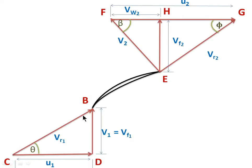We can now draw the inlet and outlet velocity triangles for the centrifugal pump. These are backward curved vanes. At the inlet velocity triangle, angle alpha is 90 degree because in a centrifugal pump water enters radially at inlet — the absolute velocity V1 makes an angle of 90 degree with the direction of motion of the impeller U1. This means Vw1 equals 0, so V1 equals Vf1.